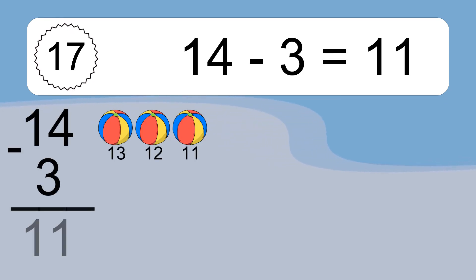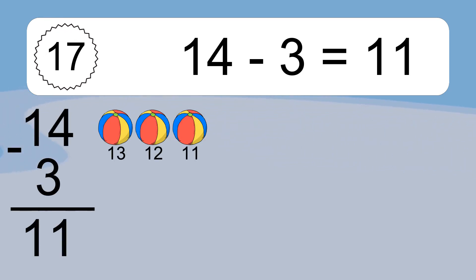14 minus 3 equals what? 14 minus 3 equals 11. Let's count it: 13, 12, 11.